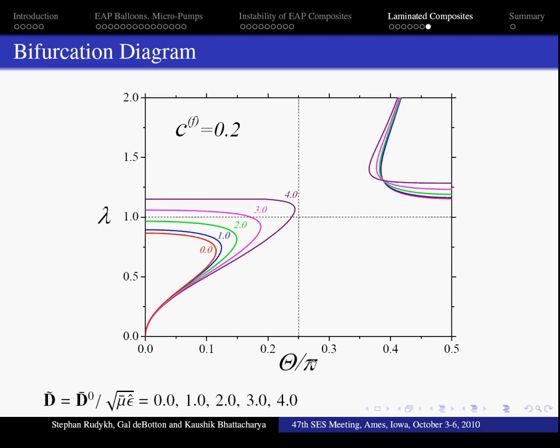First, at the left side of the plot, the increase of electric excitation results in increase of unstable domain. And next, the right side of the plot, here the picture is a bit more complicated.